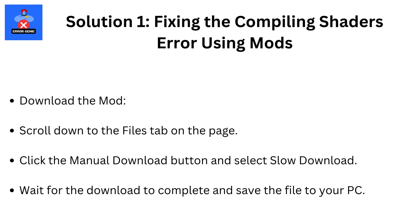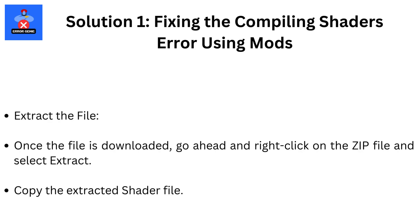Download the mod. Scroll down to the files tab on the page, click the manual download button, and select slow download. Wait for the download to complete and save the file to your PC. Once the file is downloaded, right-click on the zip file and select extract. Then copy the extracted shader file.